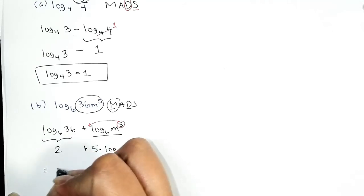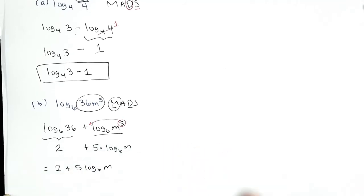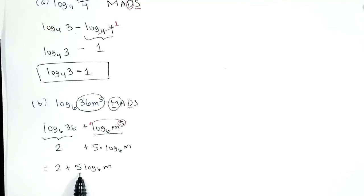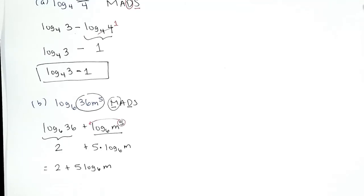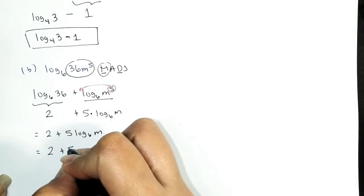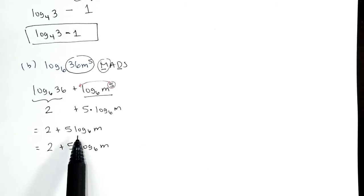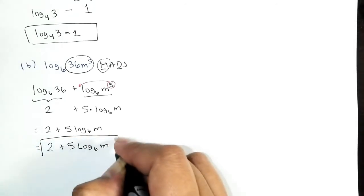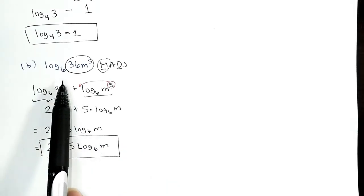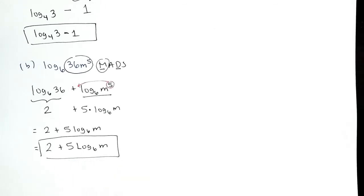Putting it together, we have 2 plus 5 times log base 6 of m. A note on notation: the lowercase l in log can look like the number 1 when you're tired, so I'll use an uppercase L for log to keep things clear. Our final answer for Problem B is 2 plus 5 times Log base 6 of m.